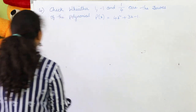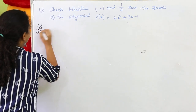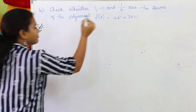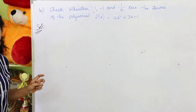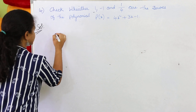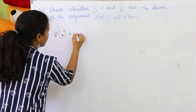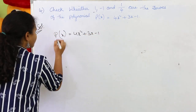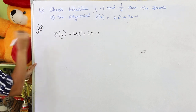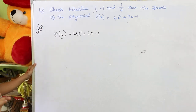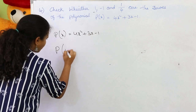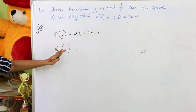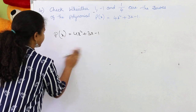Let's firstly check with positive 1. The given equation is p(x) = 4x² + 3x - 1. If x equals 1, then we evaluate p(1).